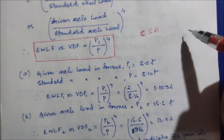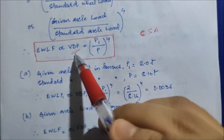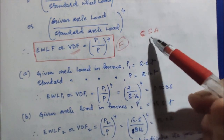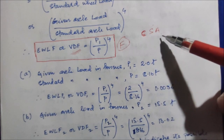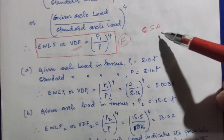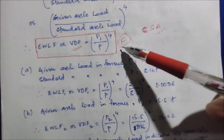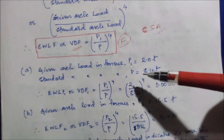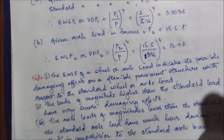While designing the flexible pavement, we will find out the cumulative standard axle (CSA) values, for which we require the value of VDF — the vehicle damage factor, sometimes also denoted as F. The cumulative standard axle load is required for the design of flexible pavement as per IRC design specifications. This is why it is important to understand the vehicle damage factor.